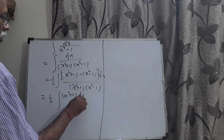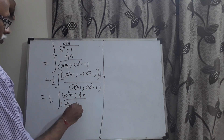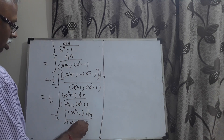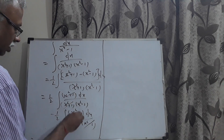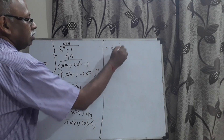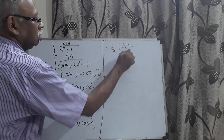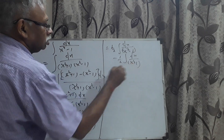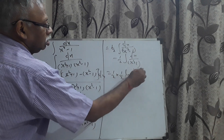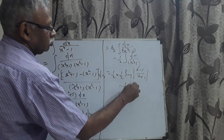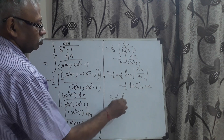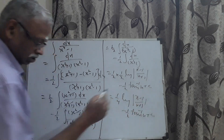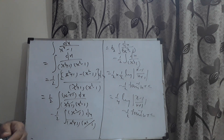This becomes (1/2)∫ (x² + 1)dx / [(x² + 1)(x² − 1)] minus (1/2)∫ (x² − 1)dx / [(x² + 1)(x² − 1)]. Here (x² + 1) cancels in the first integral and (x² − 1) cancels in the second, reducing to (1/2)∫ dx/(x² − 1) minus (1/2)∫ dx/(x² + 1). Applying standard formulae: (1/4)log|(x−1)/(x+1)| − (1/2)tan⁻¹x + C.